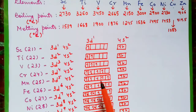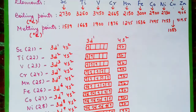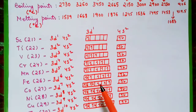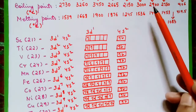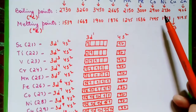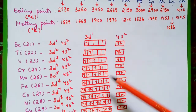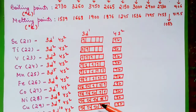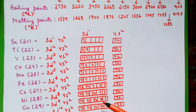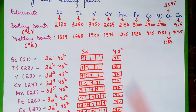For iron, there are 4 unpaired electrons, so the boiling point is about 3000 degrees Celsius. For cobalt, we have 3 unpaired electrons, so it decreases. For nickel, we have 2, so it decreases further. For copper, we have 1 unpaired electron, so it decreases again.